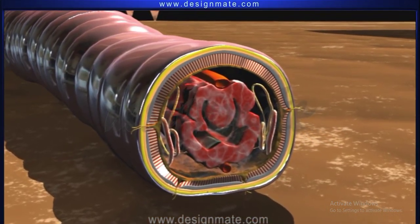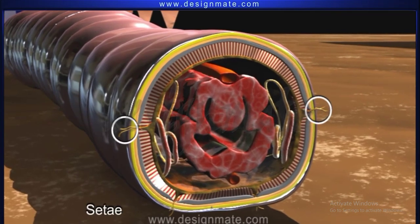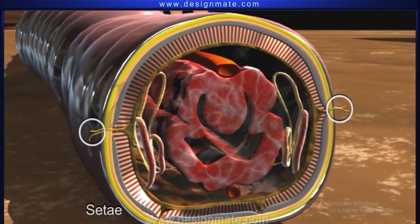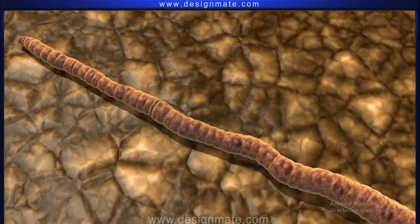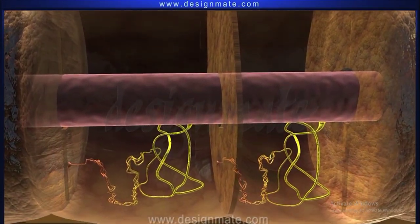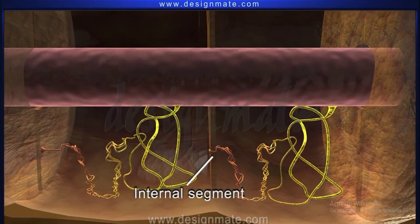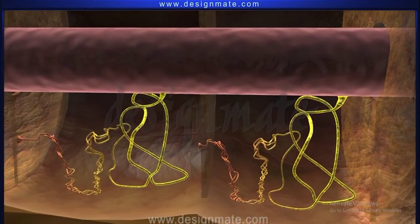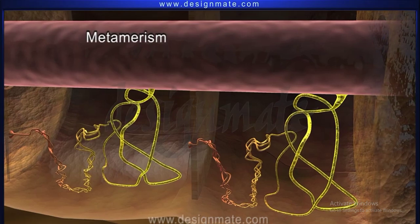Their body wall possesses chitinous setae for locomotion. Body is divided into numerous segments. The external segments are exactly equal to internal segments. Such type of arrangement of segments is called metamorism.